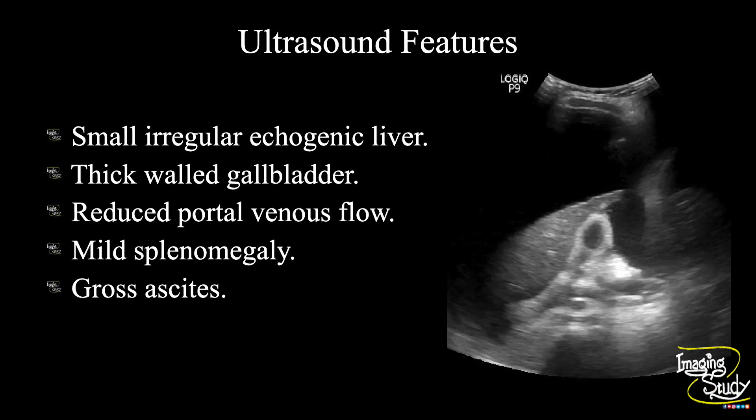In summary: a small, echogenic, irregular, coarse liver is noted. The gallbladder wall is thickened. The portal vein shows a reduced amount of flow. Mild splenomegaly and gross ascites are noted. These features conclude this as a case of cirrhosis of the liver.